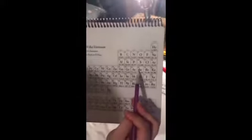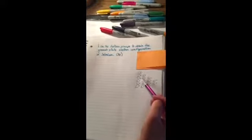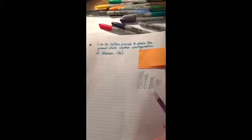Our element that we're using is selenium. Its atomic number is 34. That means that we want all of these little numbers in our electron configuration to add up to 34.